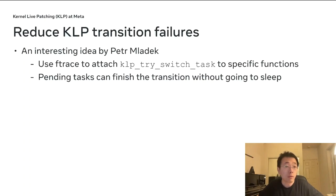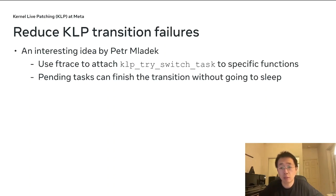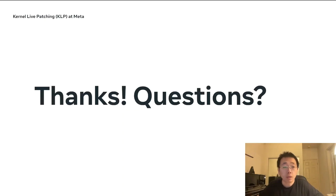We're actively looking for solutions to reduce KLP transition failures. One interesting idea by Peter is to use ftrace to attach KLP try-switch tasks to specific functions, so pending tasks can finish the transition without going to sleep. That's all we have for KLP at Meta — thanks for your attention. Any questions?